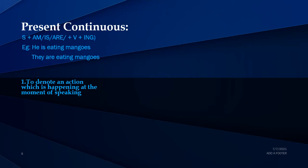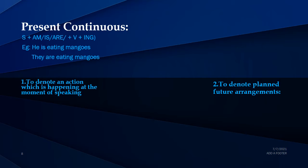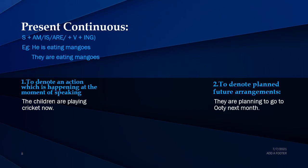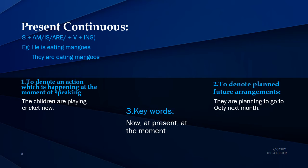Present continuous tense is used to denote an action which is happening at the moment of speaking, and also to denote planned future arrangements. For example: 'The children are playing cricket now' — this action is happening at the moment. 'They are planning to go to UT next month' — here they have planned a future arrangement. Keywords for present continuous tense are: now, at present, at the moment.